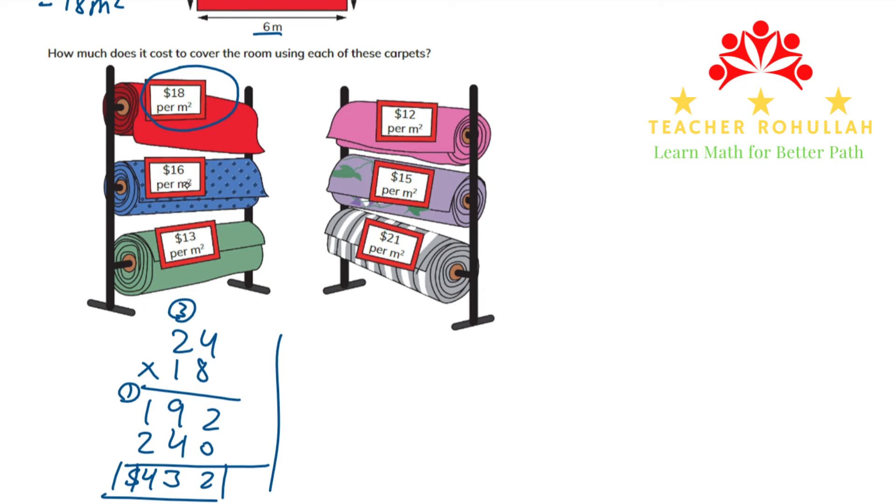And the price of the one which is $16 per square meter, we have to multiply 24 by 16. Now 6 times 4 is 24, 2 we have to carry here and 6 times 2 is 12 plus 2 is 14. 1 times 4 is 4 and 1 times 2 is 2. So we add them. 4 plus nothing is 4, 4 plus 4 is 8 and 1 plus 2 is 3. So the price of the one which is $16 per square meter is $384.